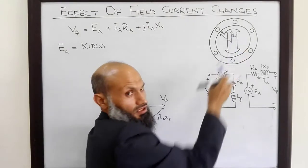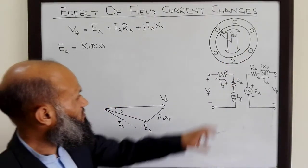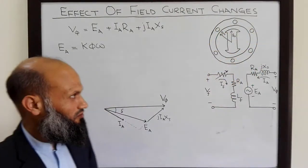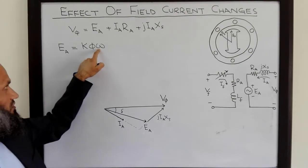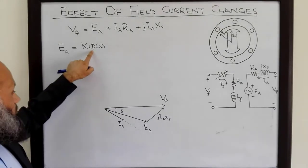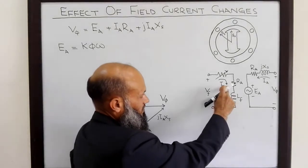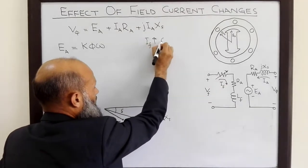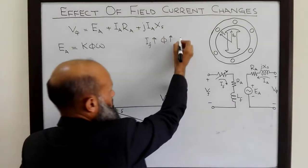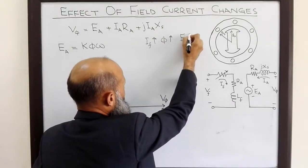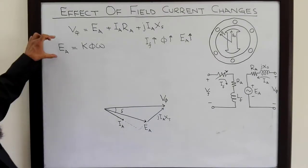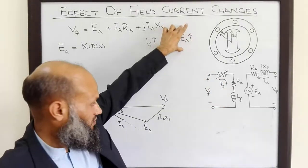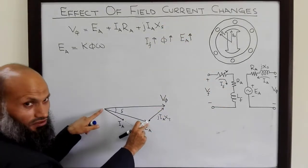For the case of synchronous motor, this rotor always rotates at synchronous speed, which is determined by the frequency of the voltage signals applied to the armature windings. So omega is constant. Phi can be changed by changing the field current — if you increase field current, phi will increase, and that will in turn result in an increase in Ea. So as we increase If, Ea will increase, and the length of this phasor will increase.